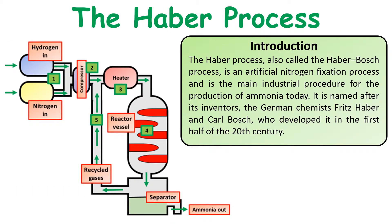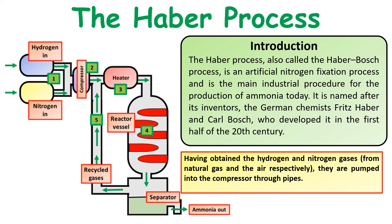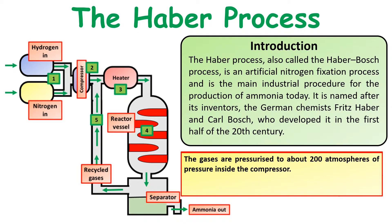Looking at the reaction as a whole: we start off by obtaining hydrogen and nitrogen. The hydrogen generally comes from breaking down methane, and the nitrogen comes from the air. They're then pumped and mixed together in a compressor, which increases the pressure to about 200 atmospheres. This helps shift the position of equilibrium so that more ammonia is produced.